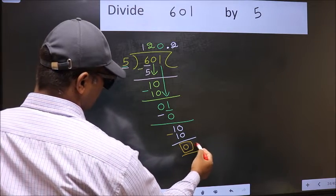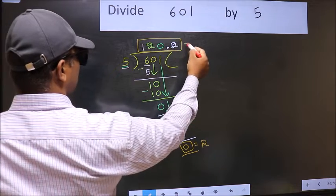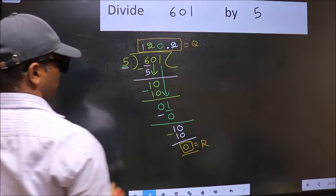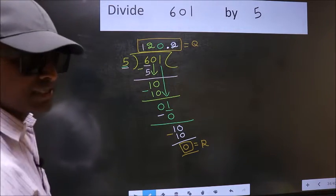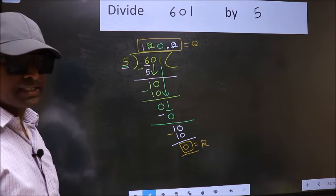So this is our remainder and this is our quotient. Did you understand where the mistake happens? You should not do that mistake.